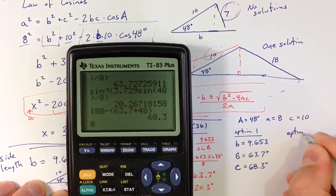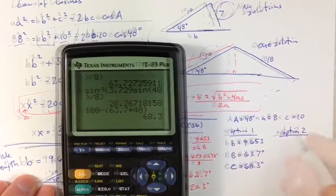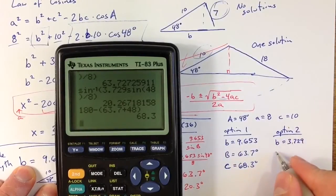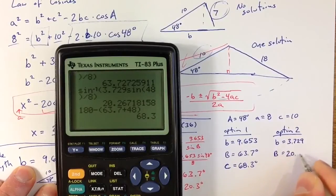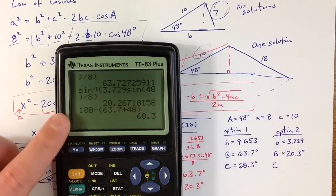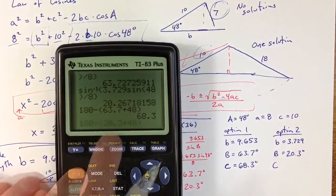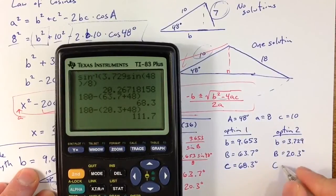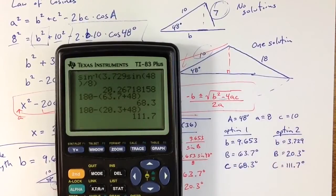Option two, the second solution, is that the side length b is 3.729. And in that case, we found that the angle B is roughly 20.3 degrees. And angle C, doing a similar calculation but this time using 20.3 instead of 63.7, we get a value for angle C of 111.7 degrees. So we get two possible solutions to the triangle.